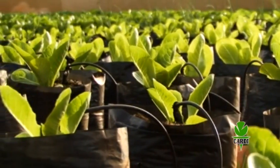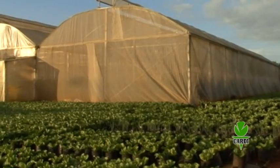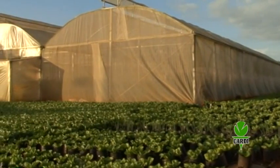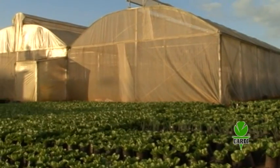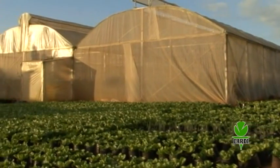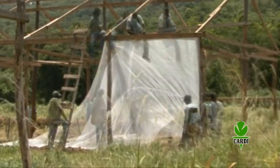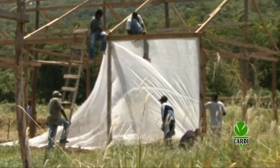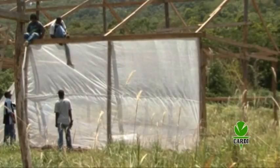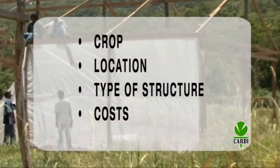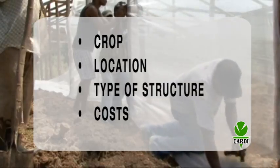There are different levels of protection depending on crop characteristics, requirements and environmental conditions. In some situations, it may not be necessary for complete protection. The following should be considered in determining suitability and features of protected agricultural structures: crop, location, type of structure and costs.